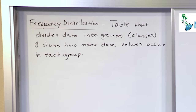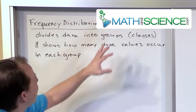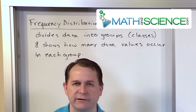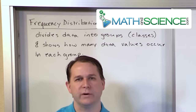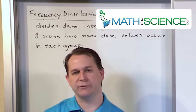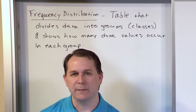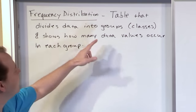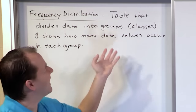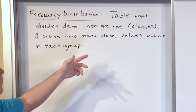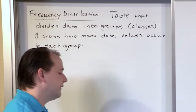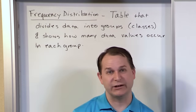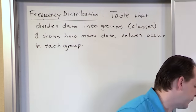Frequency distribution — it's boiled down to this: it's a table, that's all you really have to know. When someone talks about a frequency distribution, what you need to know is it's just a table of information. It divides the data into groups — we call these groups classes — and it shows how many data values occur in each group. This definition doesn't make a lot of sense until I show you what one looks like, so that's what we're going to do.